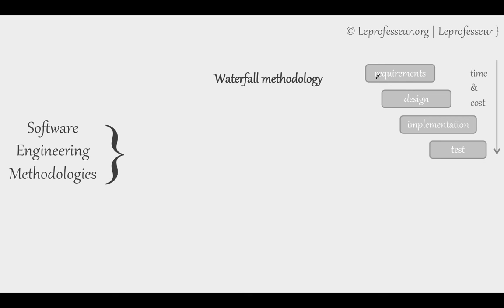It is very difficult to go back and implement changes. For example, if a customer says they want different requirements for the software and you are already in the testing phase, going back from test to requirements is quite difficult. It's going to take more time, you have to employ more people, and it considerably increases your cost. As software systems became more complex, this waterfall methodology seemed to not be working anymore, increasing the cost of the project.